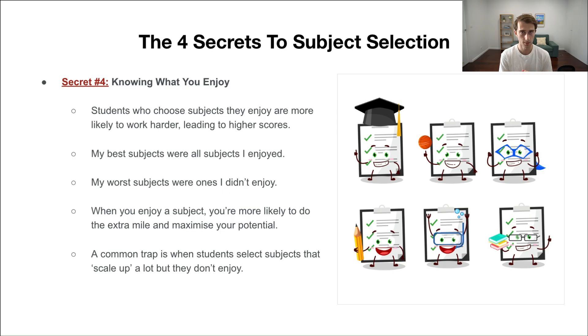What scaling is about is in VCE, for each subject you get a score out of 50. This score is not a percentage—85%, 90%, 95%—it's a ranking of you compared to everyone else. Imagine a subject like specialist maths. What types of students generally do specialist maths? Not below average, not average students either. Generally, most people who do specialist maths are above average in the state. A lot of them will get 90 ATARs, 95 ATARs, 99 ATARs, or even perfect ATARs.